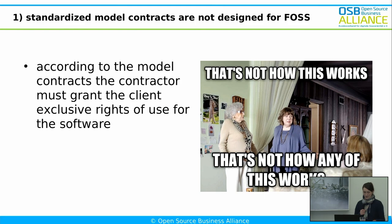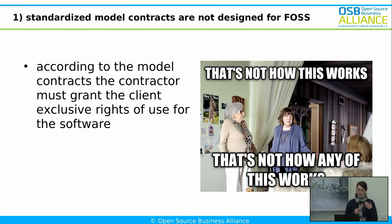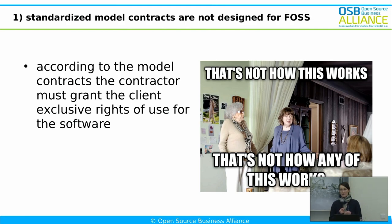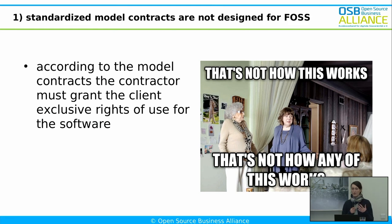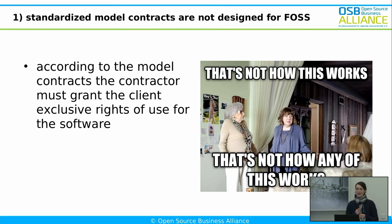The point where it becomes really clear that these standardized model contracts were designed with proprietary software in mind is whenever you read a passage where it comes to the rights of use for the software. For example, in these standardized model contracts, it's always stated that the contractor — the software company — must grant the client, that is the administration, exclusive rights of use for the software. This is not how it works with open source. You have the right to use the software as is — that's one of the beauties of open source. And the contractor cannot grant this right because the right is already there, granted by the license — not by the contractor. And the contractor certainly cannot grant an exclusive right of use.